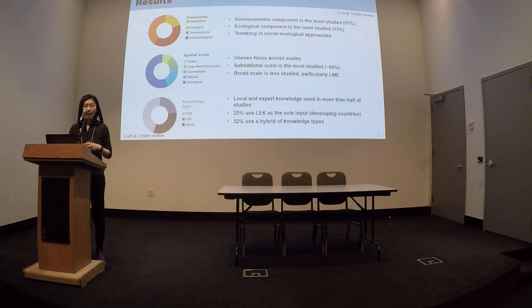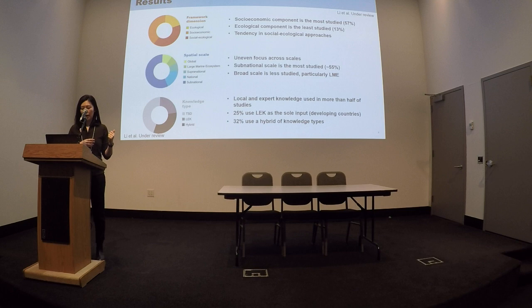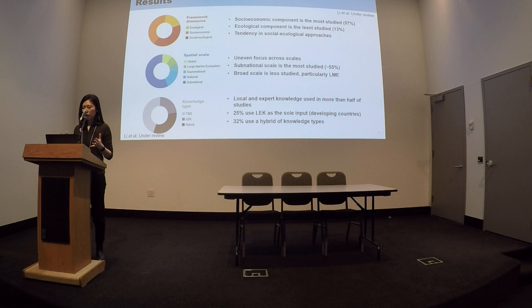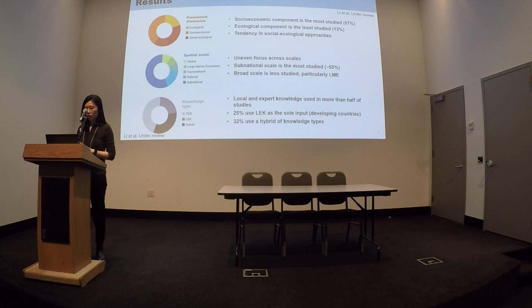Lastly, we looked at knowledge types, examining three ways of integrating different knowledge types: traditional scientific data, local and expert knowledge, and a hybrid use of both. We find more than half of the studies use local and expert knowledge, especially in developing countries. Some countries use this knowledge to describe population changes and to address the problem of data deficiency. We also find there is a knowledge integration trend — a return in sustainability research — where people want to use a hybrid of different knowledge types.